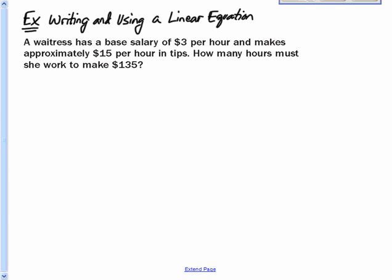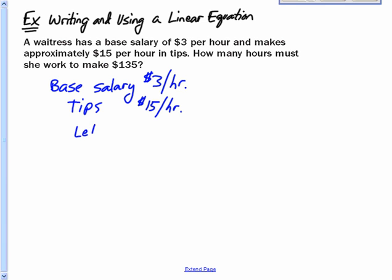All right, let's finish this off with writing it using a linear equation. A waitress has a base salary of $3 per hour. So base salary, 3 per hour. And makes approximately 15 per hour in tips. It looks like in tips, 15 per hour. How many hours must you work to make $135? Let's let x be number of hours. So the total income here, we want this to be $135. That's what we need to make.